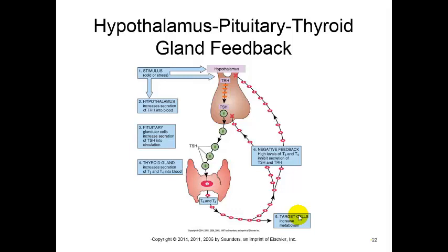An excess amount of T3 and T4 will then inhibit the secretion of TSH and TRH. So this is a negative feedback system - once we have enough of it, it shuts itself off once we warm back up.